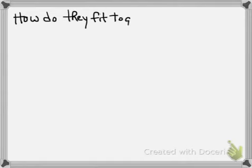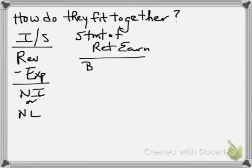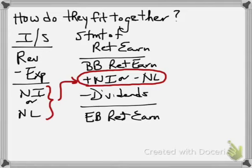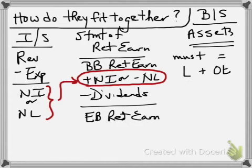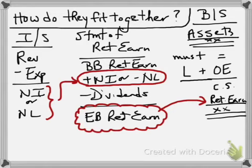So how do they fit together? We first prepare the income statement — revenues minus expenses gives us net income or net loss. That then feeds into the statement of retained earnings, where net income is added or net loss is subtracted, giving us the ending balance in retained earnings. Notice that net income must be determined first in order to prepare the statement of retained earnings. Then the balance sheet shows assets equal to liabilities plus owner's equity, which includes retained earnings. So the order is: income statement, then statement of retained earnings, then the balance sheet — those three must be prepared in that order.